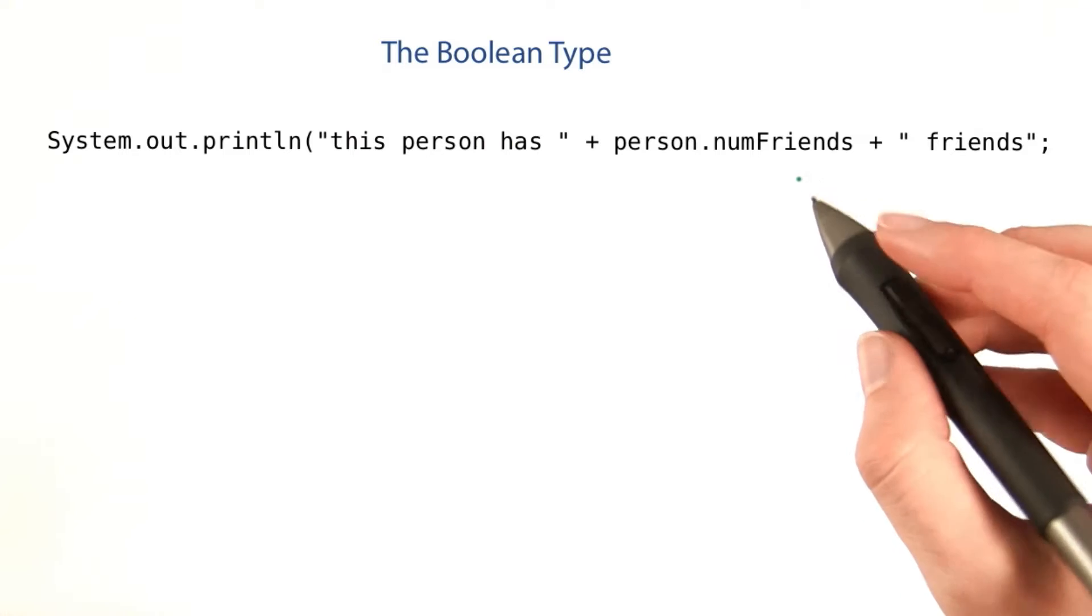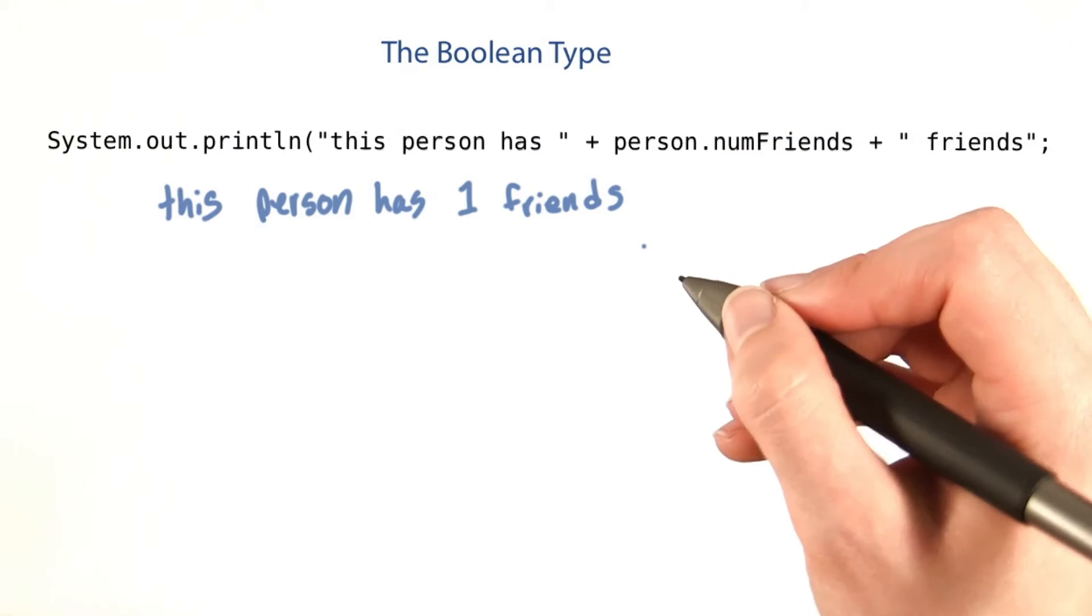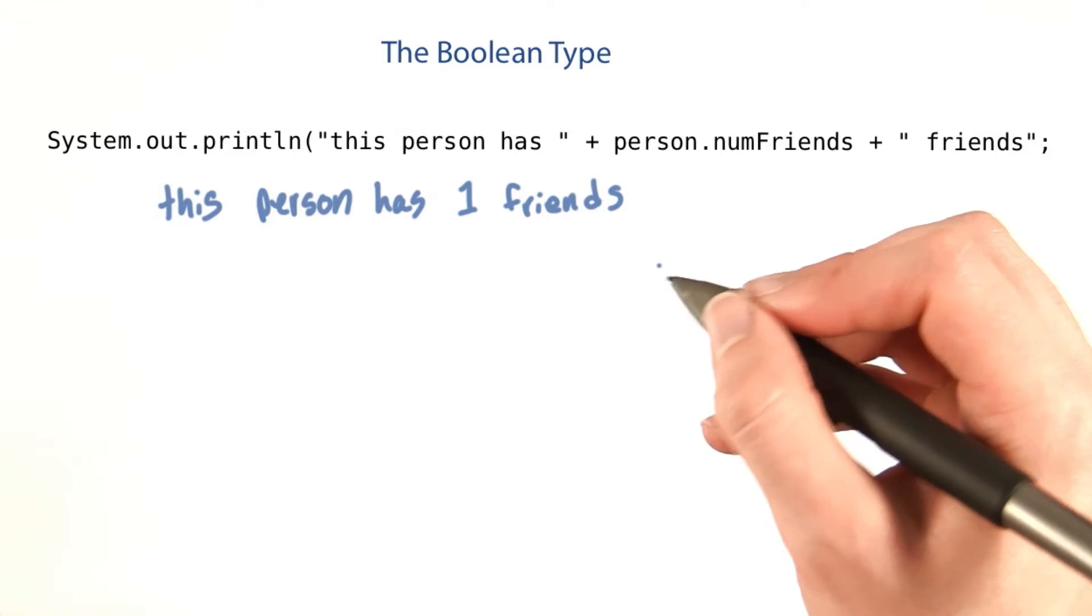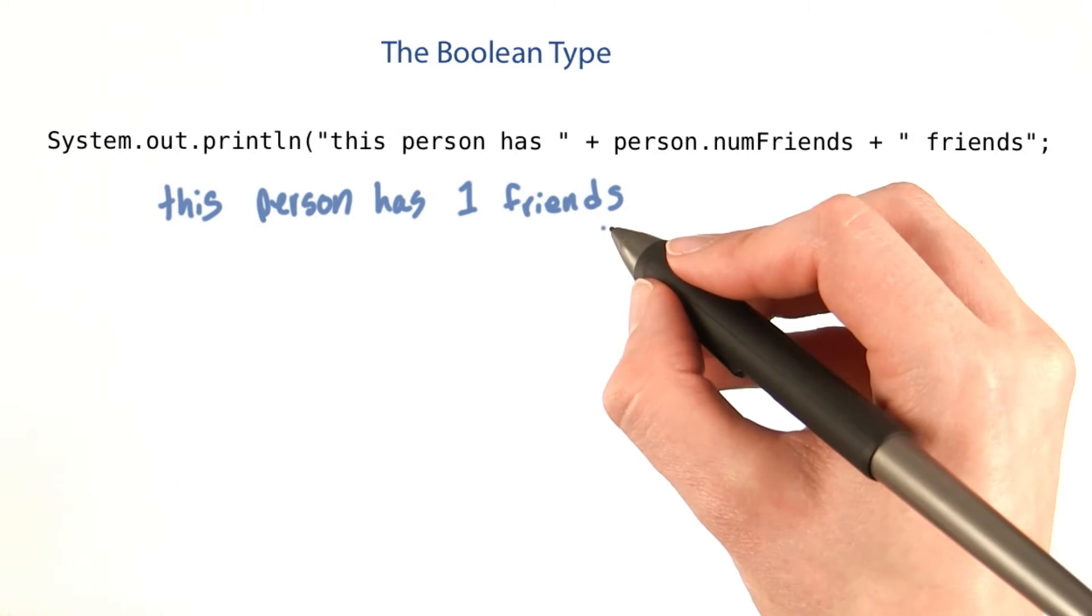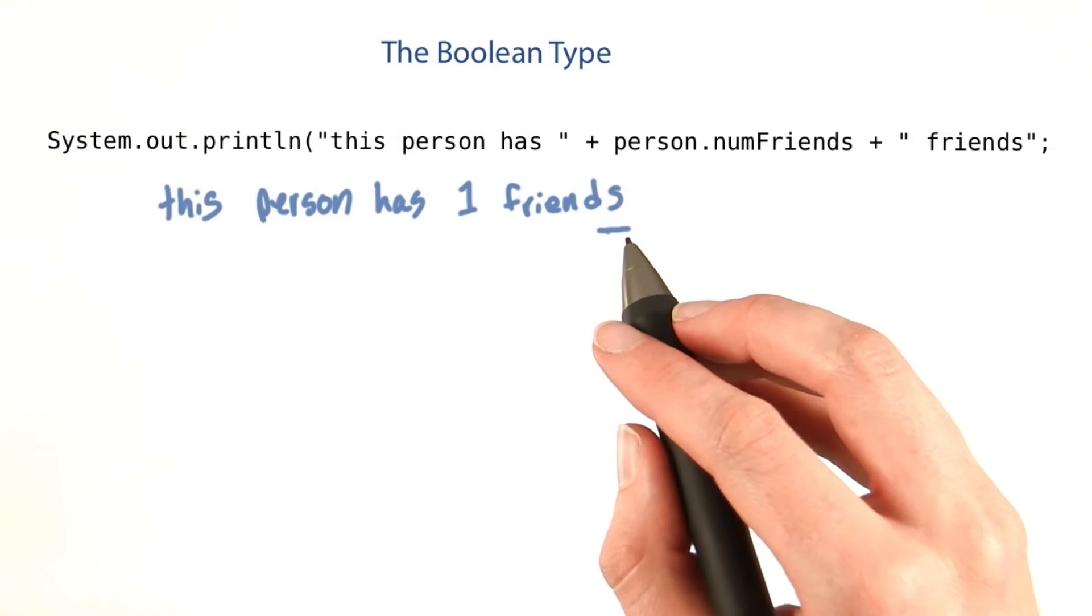But what if you only have one friend? It would print out this person has one friend. If you want a program to look professional and have output with good grammar, you often need to have the plural form and the singular form of a word. We're going to tackle that problem in a minute.